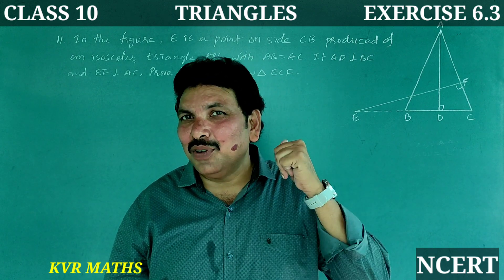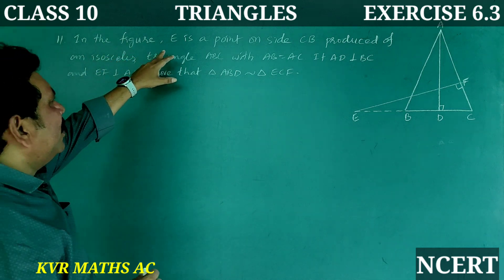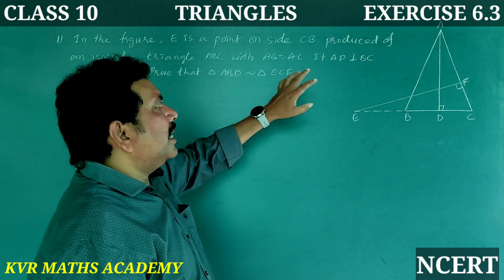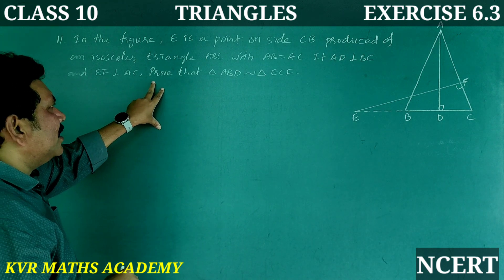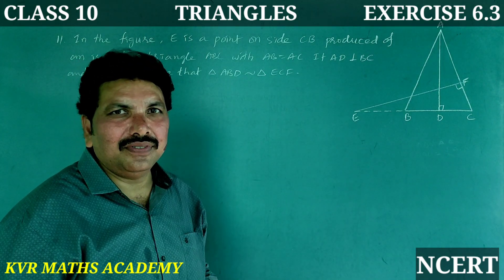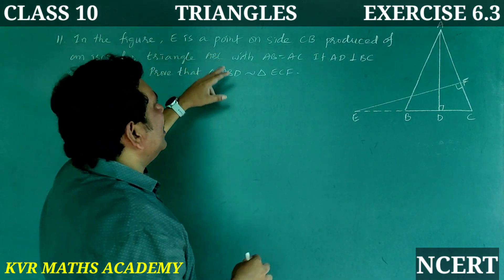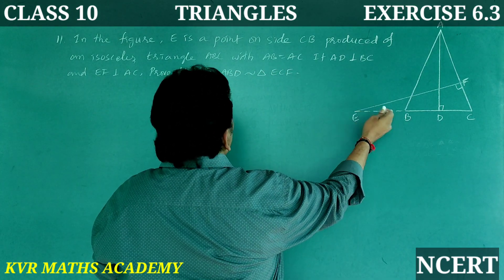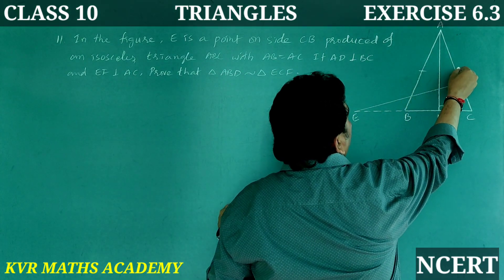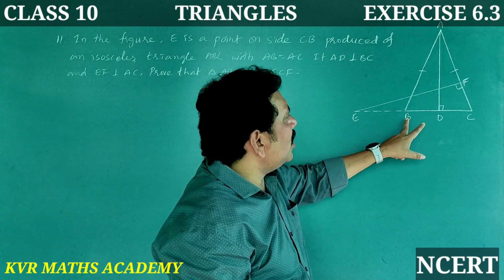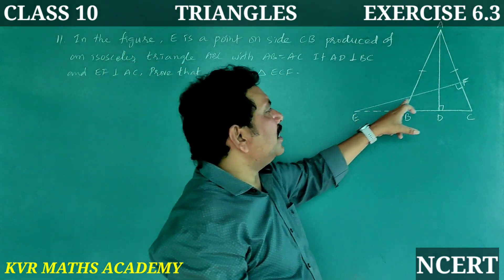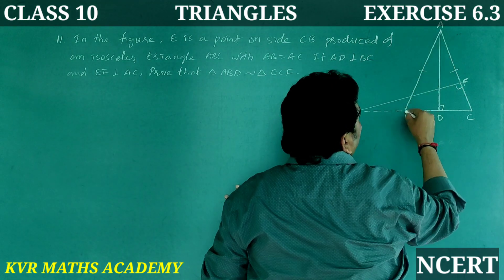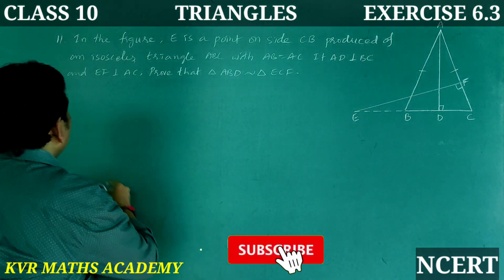11th question: In the figure, E is a point on side CB produced of an isosceles triangle ABC with AB equal to AC. If AD is perpendicular to BC and EF is perpendicular to AC, prove that triangle ABD is similar to triangle ECF.